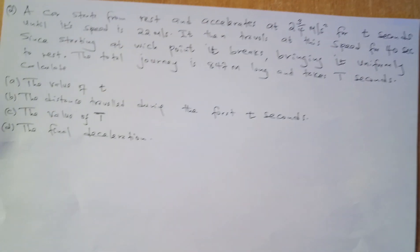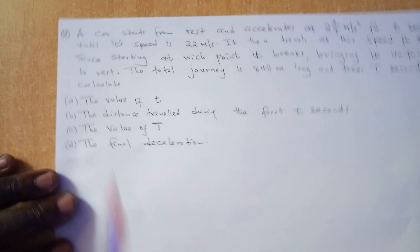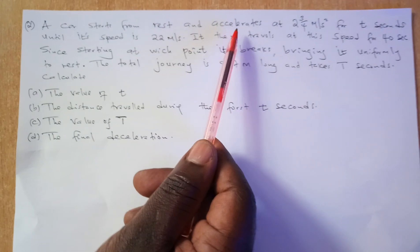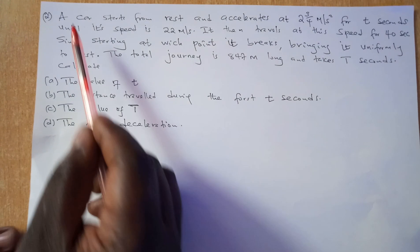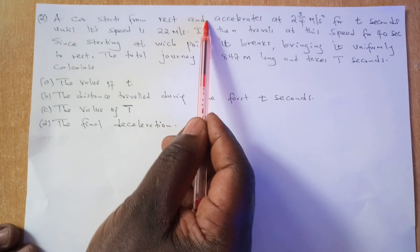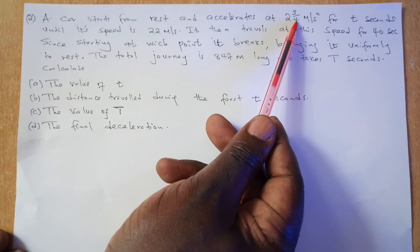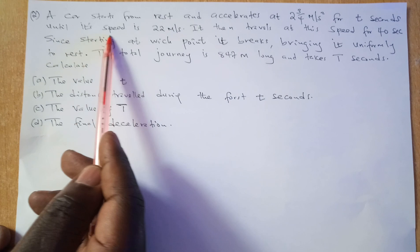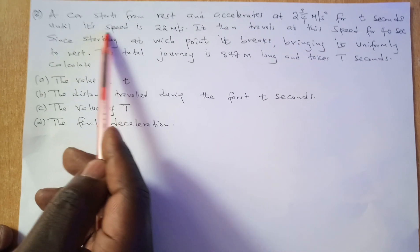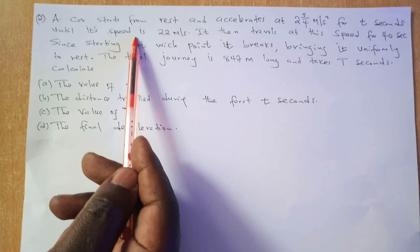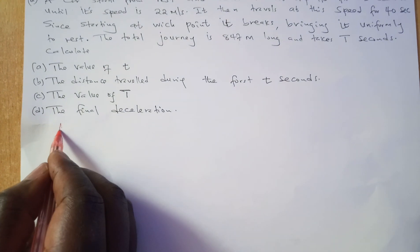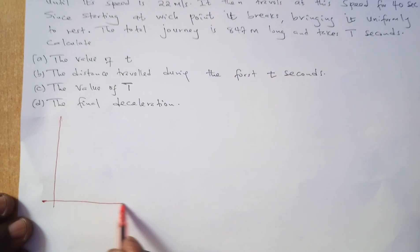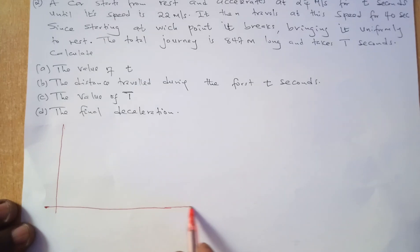Moving to the next example. A car starts from rest and accelerates at 2¾ meters per second squared for t seconds until it reaches a speed of 22 meters per second. There is no sketch provided — you are supposed to draw your own.